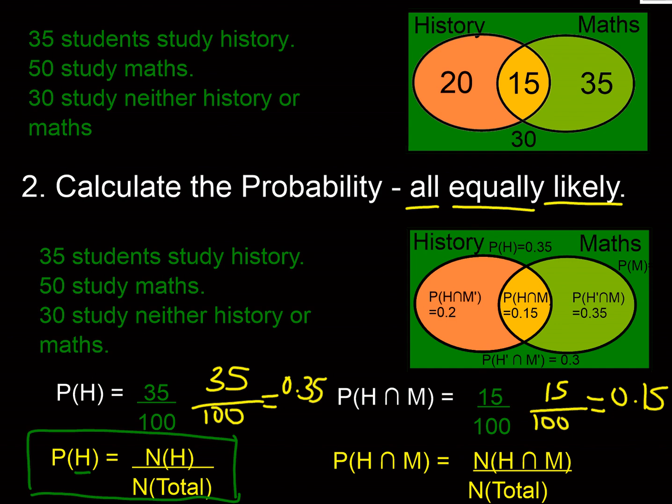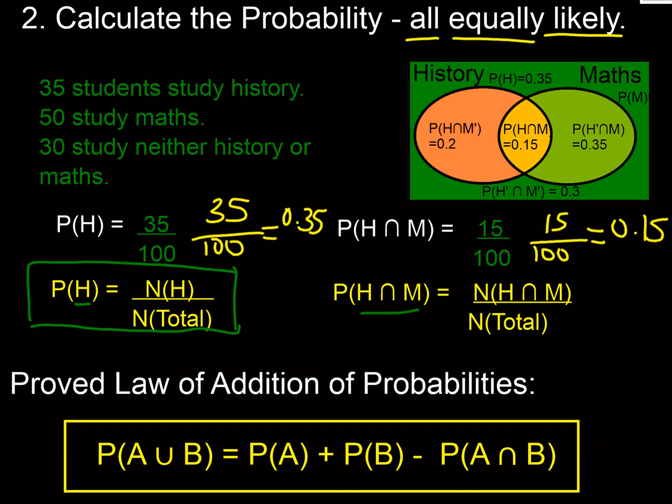We've also proved another fundamental law here called the law of addition of probabilities. Let me treat it now as being the problem above. The probability that you're doing history or maths: we know that there were 70 students out of 100, so that's 0.7, and that's going to equal the probability you're doing history.